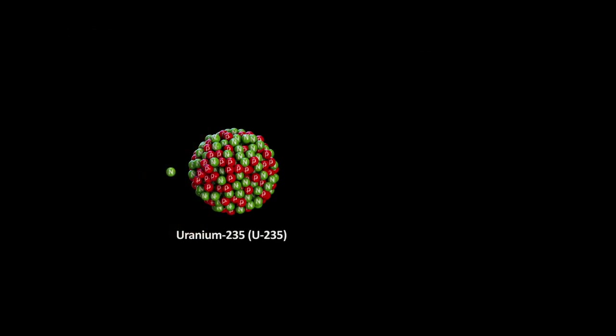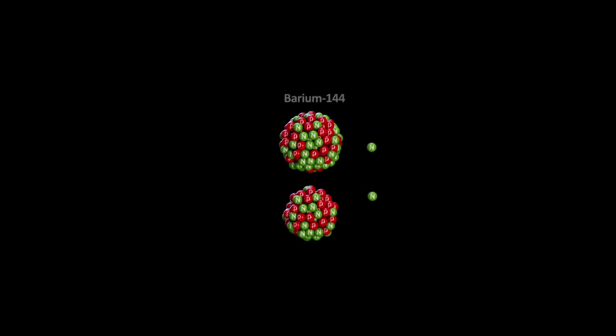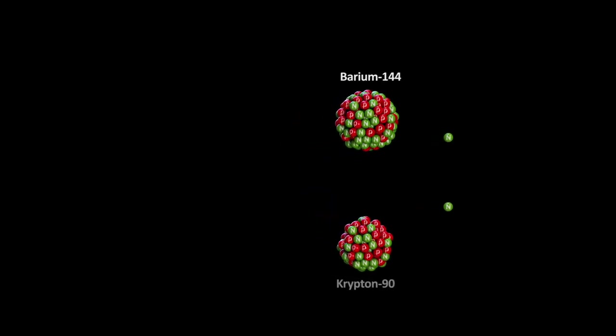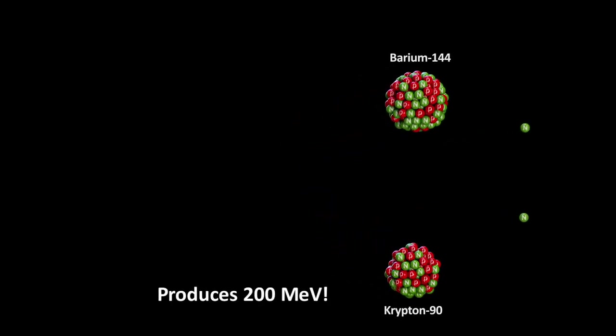It should be noted that U-235 can be split into other atoms as well, such as barium-144 and krypton-90 plus 2 neutrons, which releases even more energy, around 200 mega-electron volts.